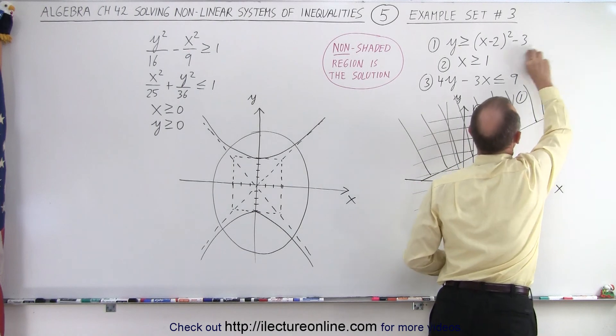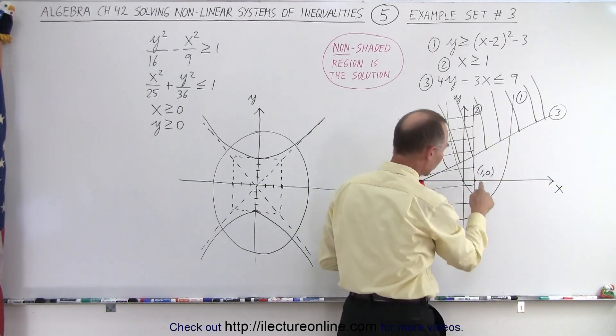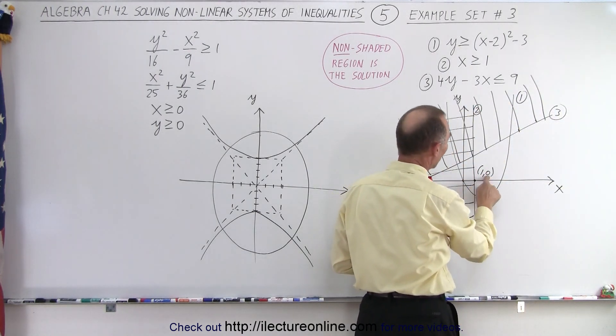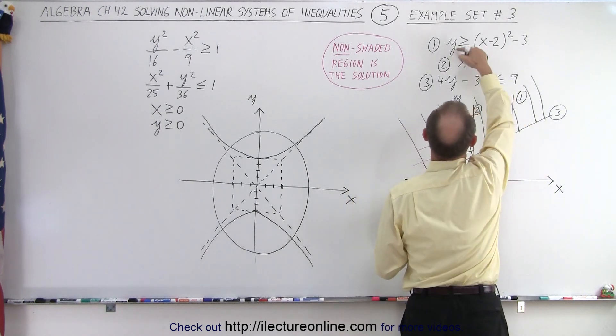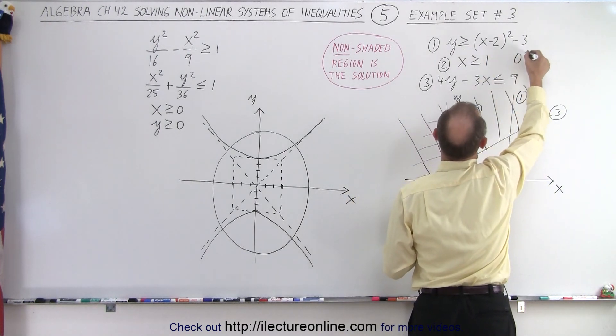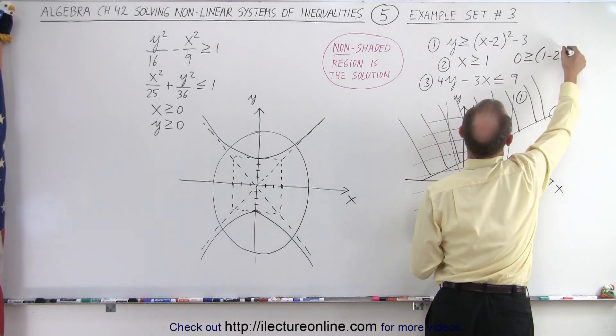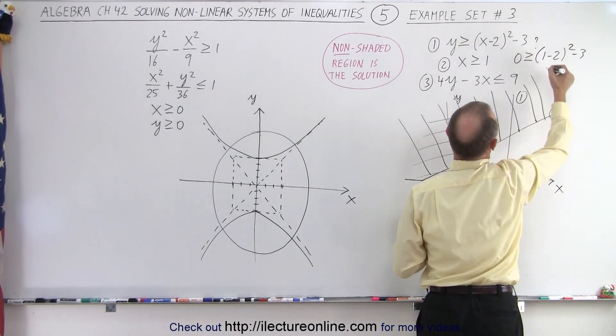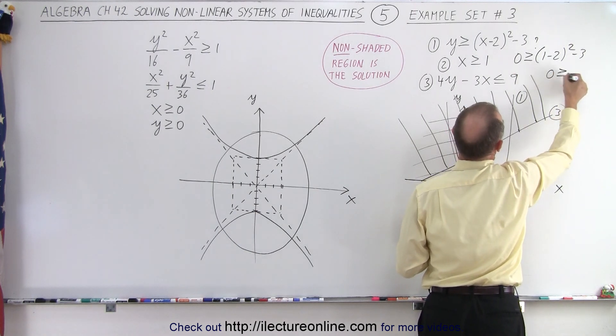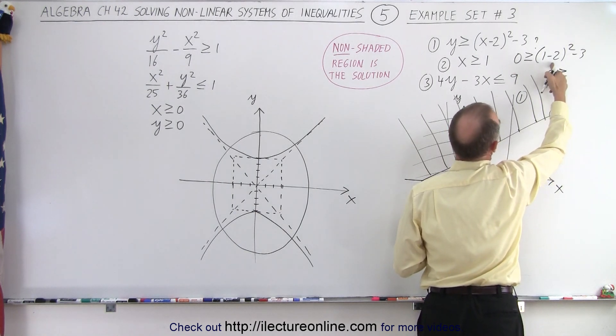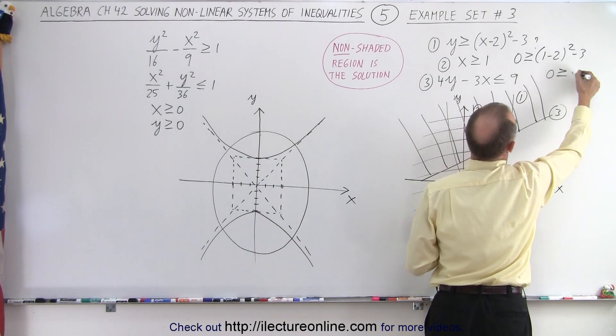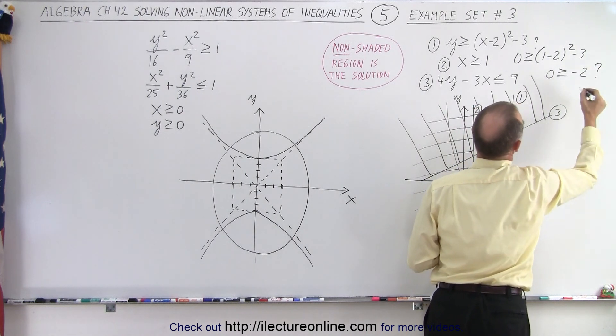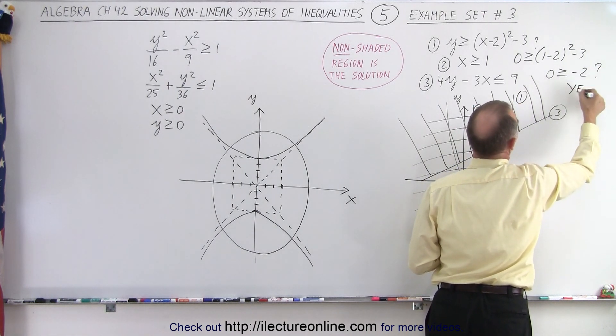Let me try this again. So I'm plugging in the point one, zero. X is one, y is zero. So we have zero greater than or equal to one minus two quantity squared minus three. That's better. So that's a question mark. So is zero greater than or equal to this is negative one squared, which is one minus three, which is minus two question mark. And the answer is yes.